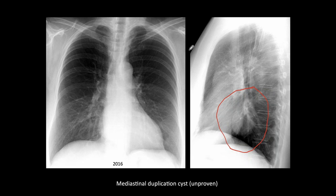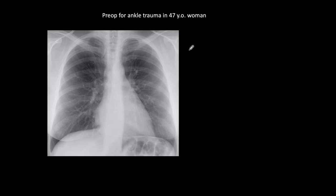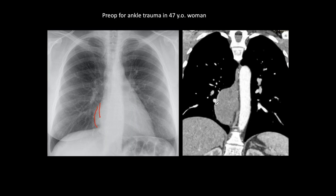I'm showing this case to stress the importance of looking at the right side of the heart to detect a double contour. Another pre-op film — ankle trauma in a 47-year-old asymptomatic woman. Again, normal left heart but abnormal right heart: a double contour — contour of the heart and a second contour indicating a mass. CT was done and shows a solid mass adjacent to the esophagus, most likely a spindle cell tumor. She was operated on and it turned out to be a GIST — gastrointestinal stromal tumor — of the esophagus, which is potentially malignant. Discovered because of a double contour in the pre-op film.